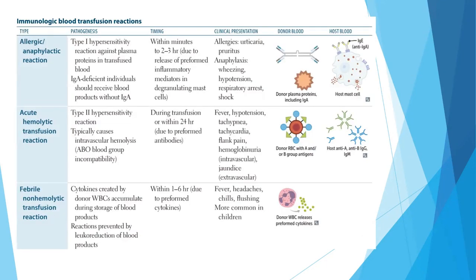Regarding immunologic blood transfusion reactions: allergic or anaphylactic reactions are type 1 hypersensitivity reactions against plasma proteins in transfused blood. IgA-deficient individuals should receive blood products without IgA. Timing is within 3 minutes to 2-3 hours due to release of preformed inflammatory mediators. Clinical presentations include urticaria, pruritus, wheezing, hypotension, and respiratory arrest. Acute hemolytic transfusion reaction is a type 2 hypersensitivity reaction causing intravascular hemolysis during or within 24 hours of transfusion, presenting with fever, hypotension, tachycardia, flank pain, and hemoglobinuria. Febrile non-hemolytic reactions occur due to cytokines accumulated during blood storage, presenting within 1-6 hours with fever, headache, and chills.